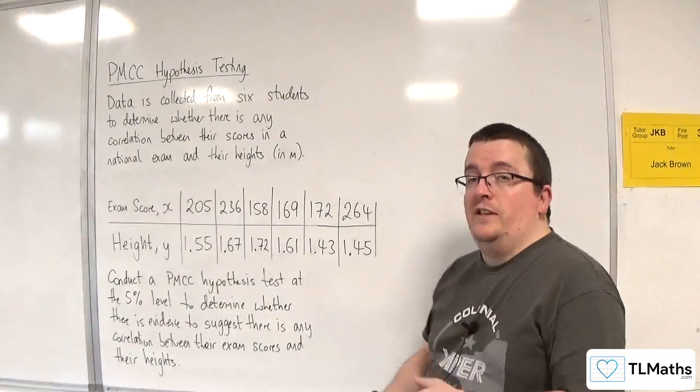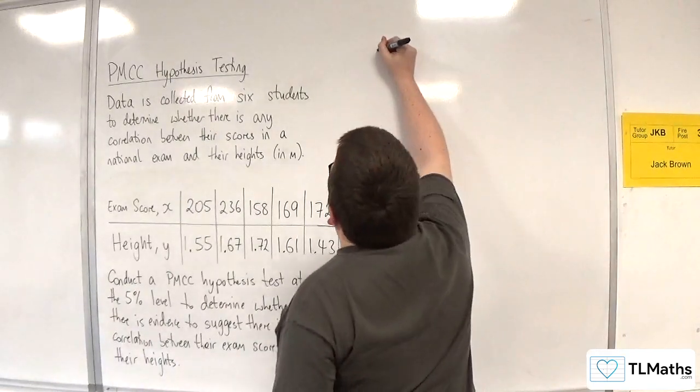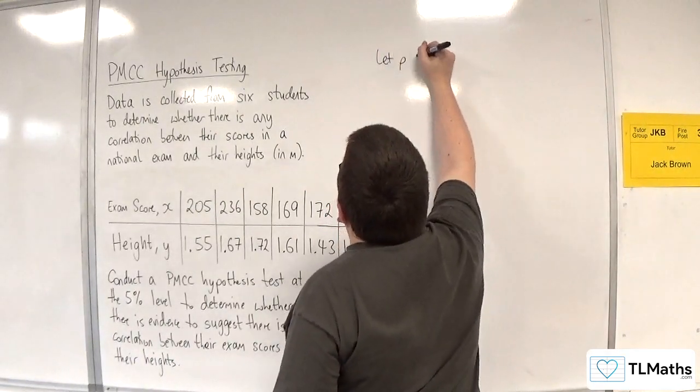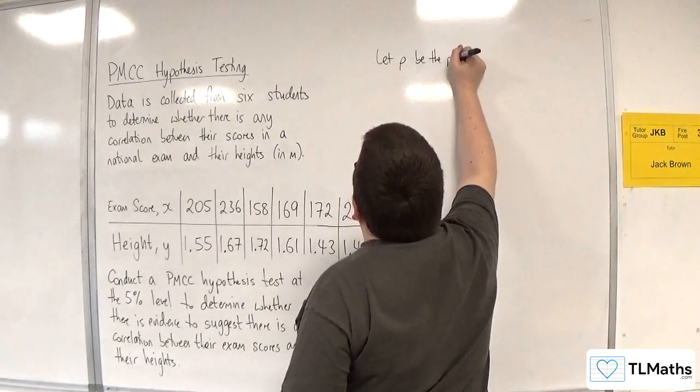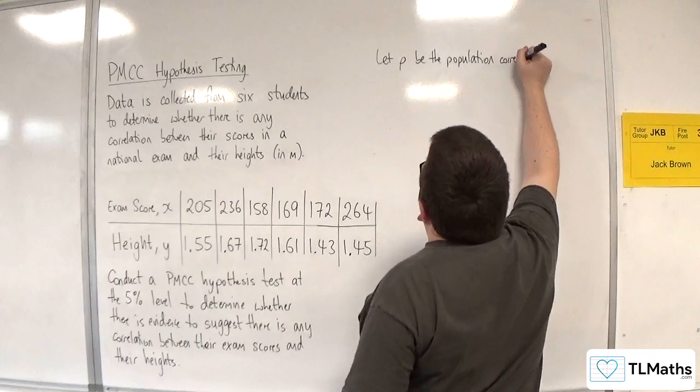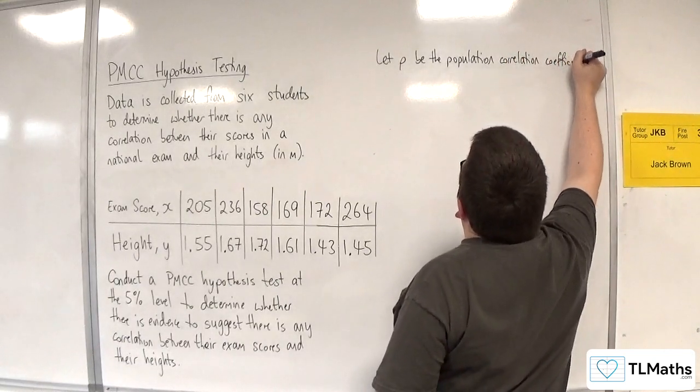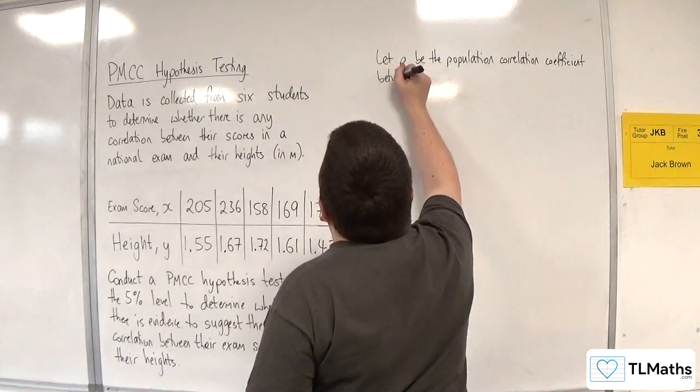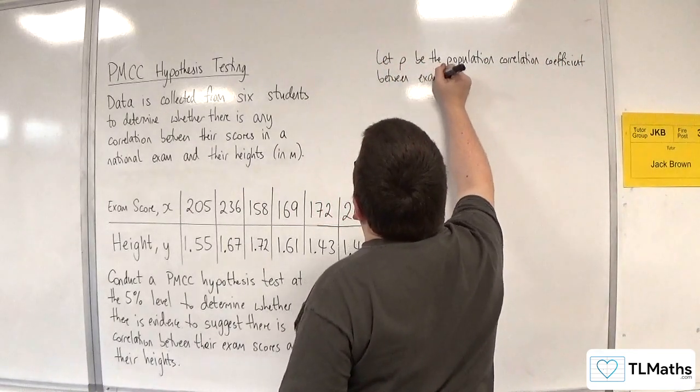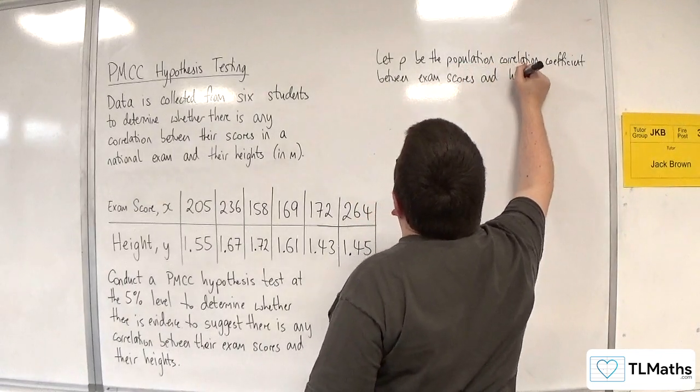First thing that we need to do is to define rho, the population correlation coefficient. Let rho be the population correlation coefficient, and it needs to be in context between exam scores and heights.